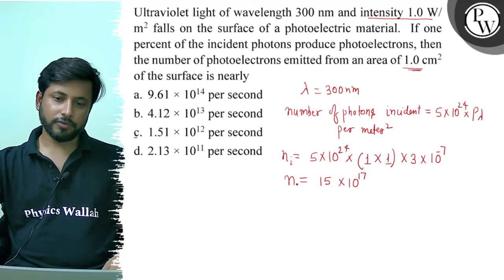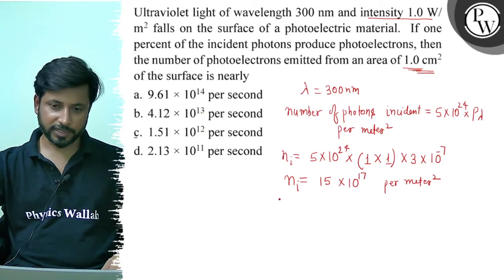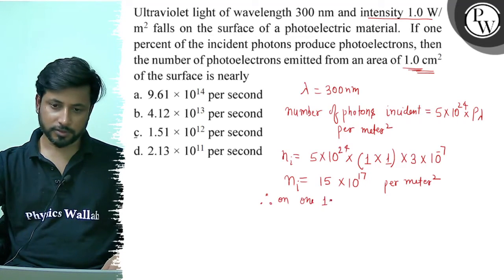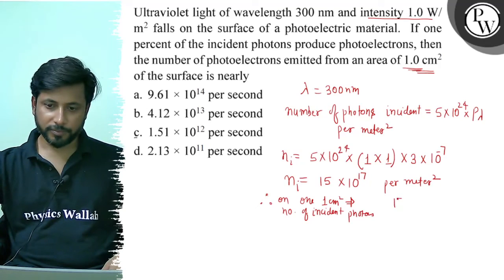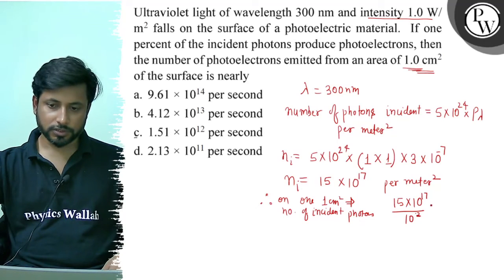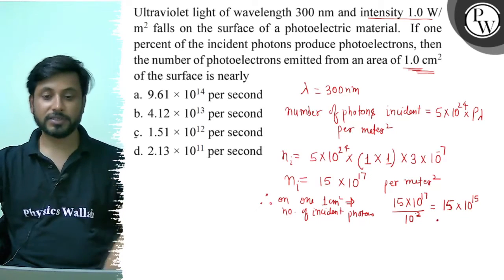Yeh 15×10^17 incident photons ki sankhya hai per meter square. We will now take 1 centimeter square. Therefore on 1 centimeter square, number of incident photons = 15×10^17 divided by 10^2 = 15×10^15 photons per centimeter square per second.